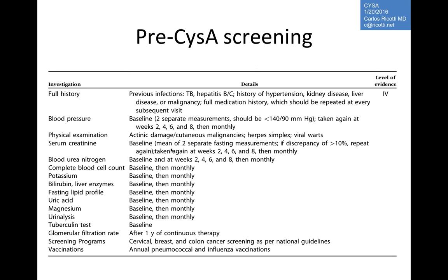Urinalysis and a TB or QuantiFERON-Gold test should be performed initially and prior to receiving the drug, then likely yearly thereafter similar to biologic recommendations. Patients should be up to date with screening for underlying malignancies. They should receive annual pneumococcal and influenza vaccines — no live vaccines.